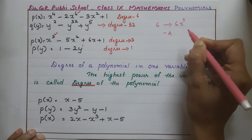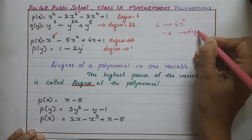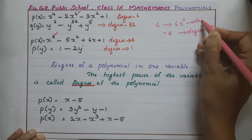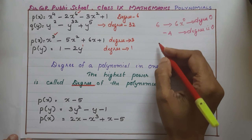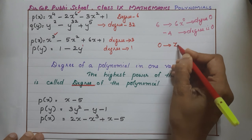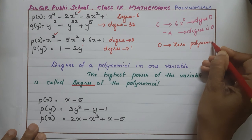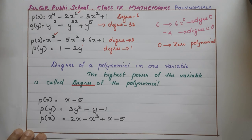Minus 4 is also a constant polynomial, so its degree is also 0. But what about the degree of the zero polynomial? 0 is called the zero polynomial. The degree of a zero polynomial is not defined.